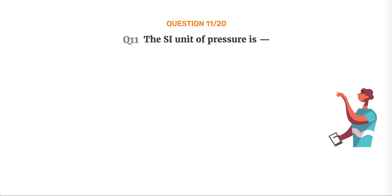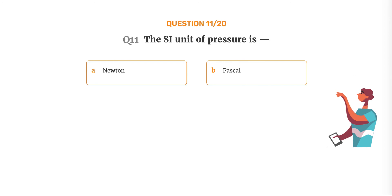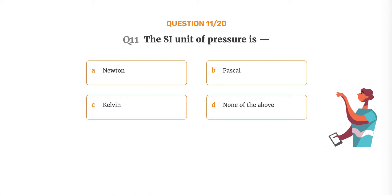Question number 11. The SI unit of pressure is. Option A: Newton. Option B: Pascal. Option C: Kelvin. Option D: None of the above.